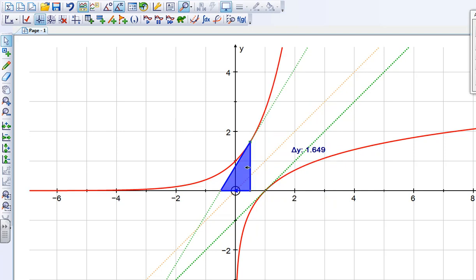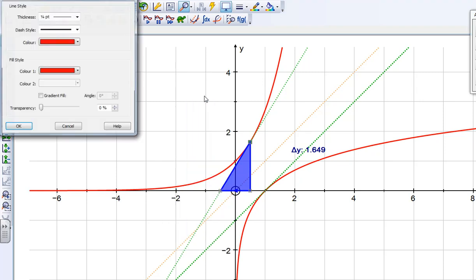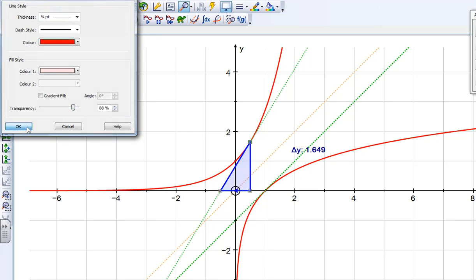It's a little bit dark at the moment, so if I select it and then right click and edit my draw options, I'm going to make it a little bit more transparent, so it's not quite as dark on the page. That looks a little bit better.